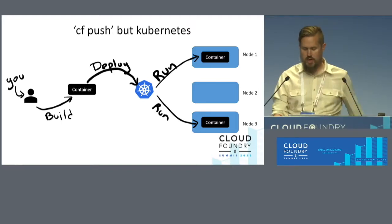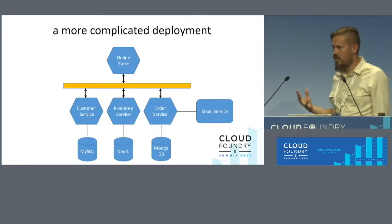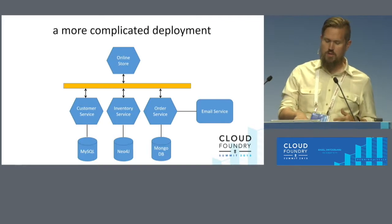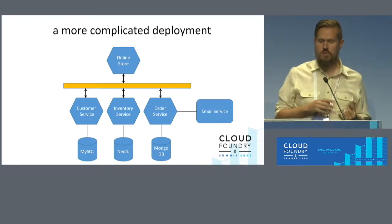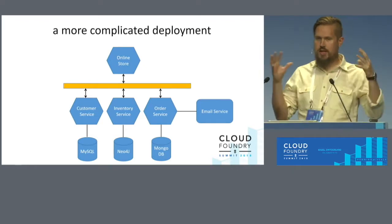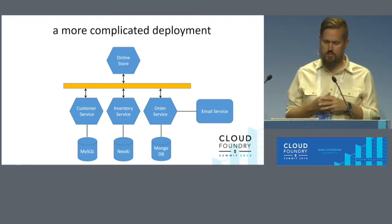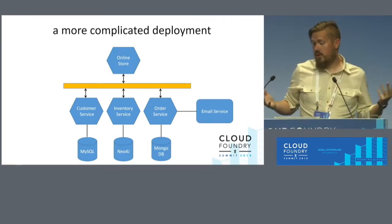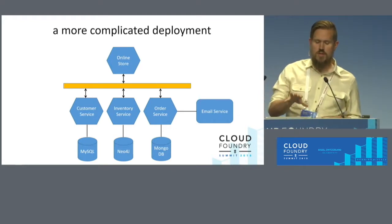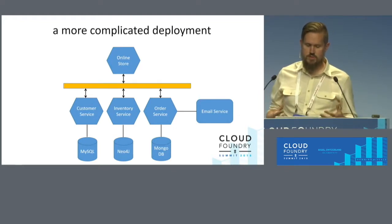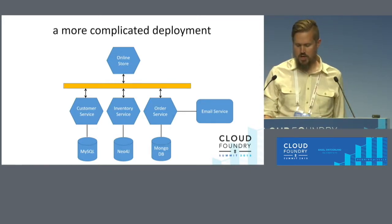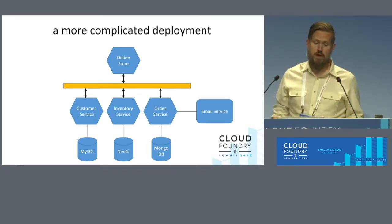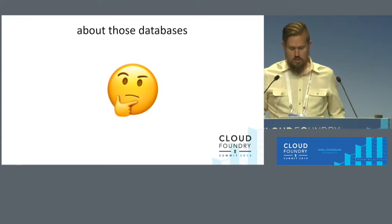When you get to a bigger, more complicated environment with multiple services — the online store, customer service, inventory service, and order service — those are containerized applications running on Kubernetes. The email service is some external thing. MySQL, Neo4j, and MongoDB could be run on the cluster or externally. But using that spec and status model, how do you define what those things look like and connect them to your application? Kubernetes doesn't have something that necessarily gives you the ability to provision a MySQL out of the box.